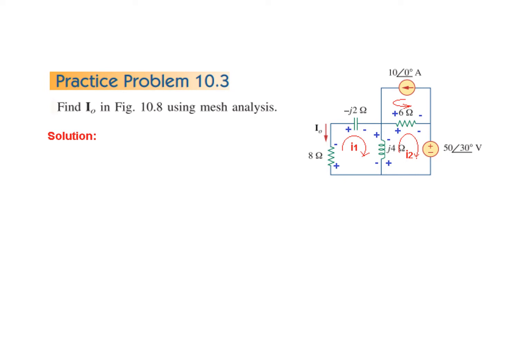Similarly, positive-negative, positive-negative, and in the second loop also positive-negative and positive-negative, and also in the upper loop. Now we are ready to write the KVL equations. First of all, mesh one — this mesh.